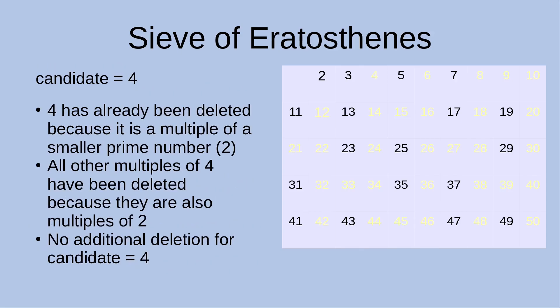Now let us see the case when the candidate becomes 4. The number 4 has already been deleted because it is a multiple of the smaller prime number 2. So all other multiples of 4 have already been deleted because they are also multiples of 2. Therefore, no additional deletion is needed when the candidate is equal to 4.